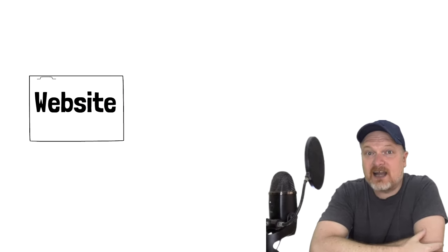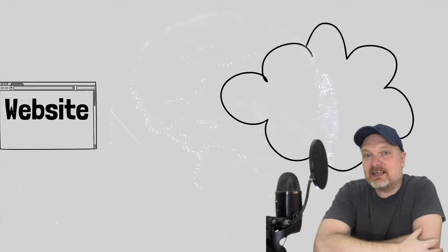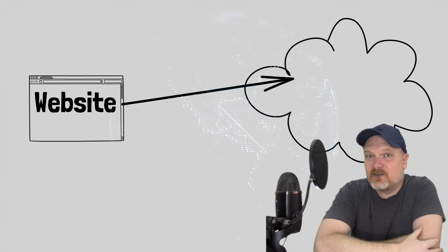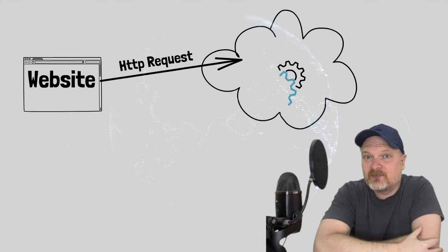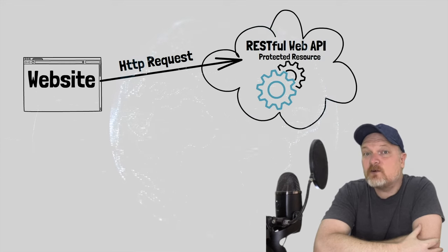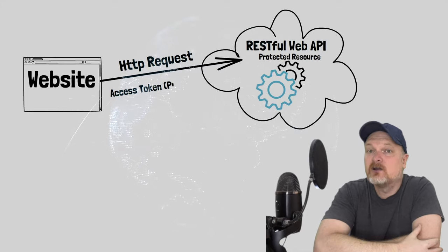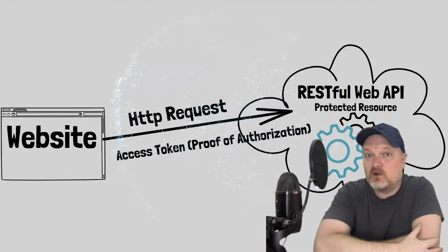Authorization is, for example, when a website wishes to call an API hosted on another server. The API is a protected resource, which means it cannot be accessed unless the caller is authorized. Proof of authorization must be sent along with the request for resources with the relevant API call.